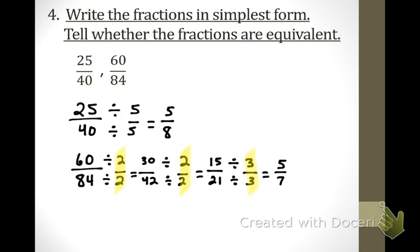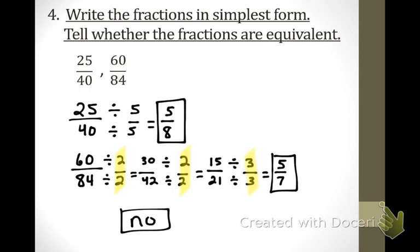So the first fraction in simplest form is 5 eighths and the second is 5 sevenths. Do those equal each other? No, they do not. 5 eighths is not the same thing as 5 sevenths, so the answer is no — they are not equivalent. In order for something to be equivalent, it would have to be like 5 sevenths and 5 sevenths — the exact same thing.